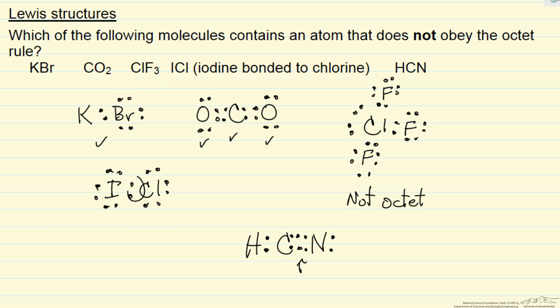So the molecule that does not satisfy the octet rule is chlorine bound one, two, three fluorine.